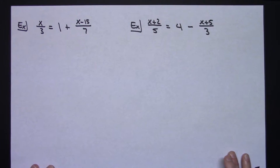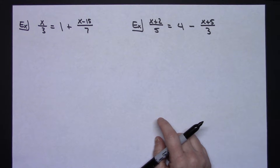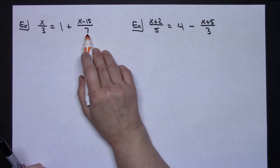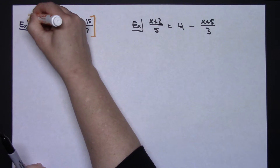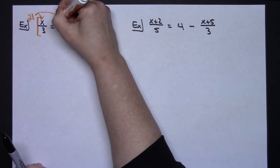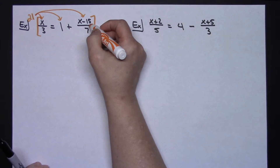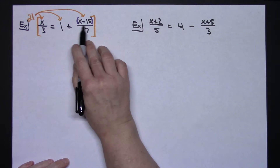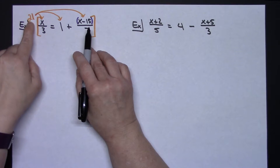Now doing two more examples. This time the linear equations have binomial terms in the numerators rather than single terms. The process is still the same. Looking at all the denominators — I've got a 7 and a 3 — so the least common denominator is going to be 21. I'll distribute that to each term. It's a good idea to put parentheses around the binomial numerator X minus 15 so we don't forget that it really is a binomial.